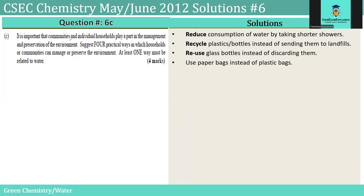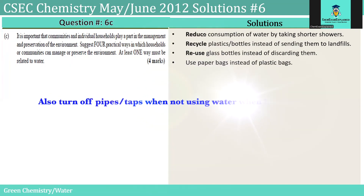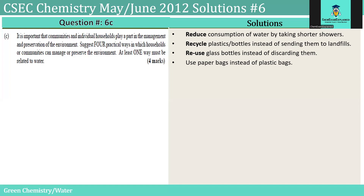It is important that communities and individual households play a part in the management and preservation of the environment. Suggest four practical ways in which households or communities can manage or preserve the environment — at least one way must be related to water. We could look at the three R's as part of our answer. First, we could reduce the consumption of water by taking shorter showers. We could recycle plastics or bottles instead of sending them to landfills. We could reuse glass bottles instead of discarding them. And we could use paper bags instead of plastic bags.